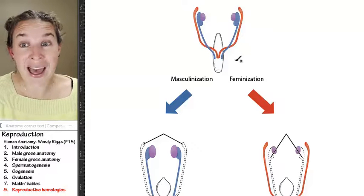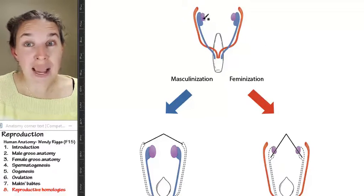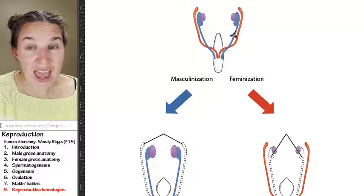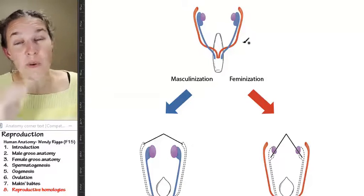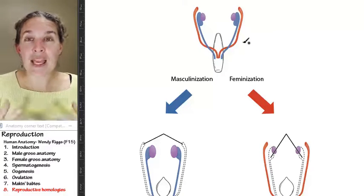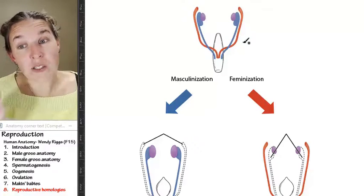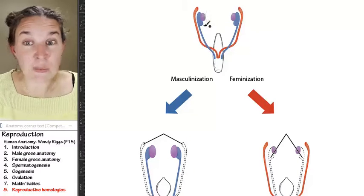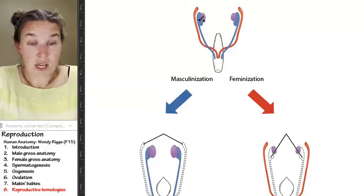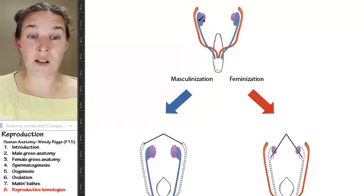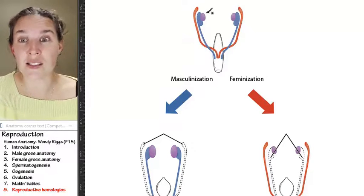The Y chromosome acts on the bipotential gonad and causes it to descend, with the help of the gubernaculum, into the scrotum. The Y chromosome, take a look at this. This bipotential gonad is going to be, well, if the Y chromosome isn't there, it's going to become an ovary.